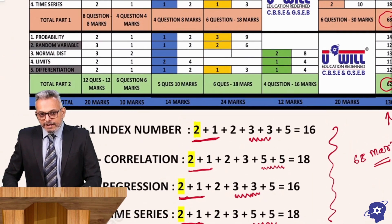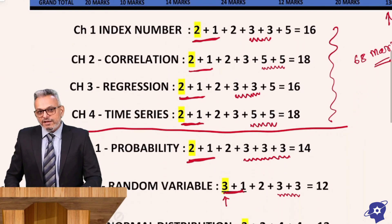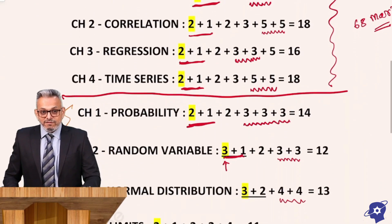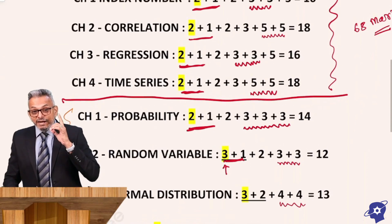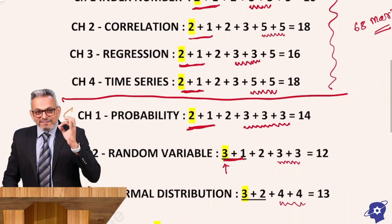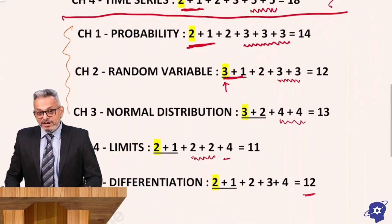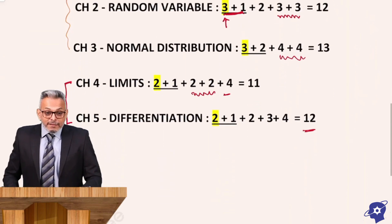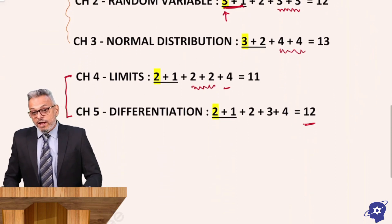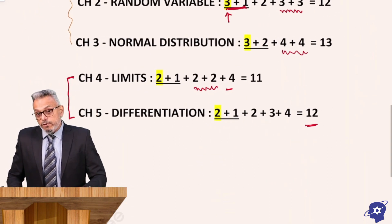Once again, a rapid recap. Index Number 16 marks, Correlation 18 marks, Regression 16 marks, Time Series 18 marks. So complete part 1 is 68 marks. Probability 14, Random Variable 12, Normal Distribution 13, Limits 11, and Differentiation 12. So 62 marks is part 2.